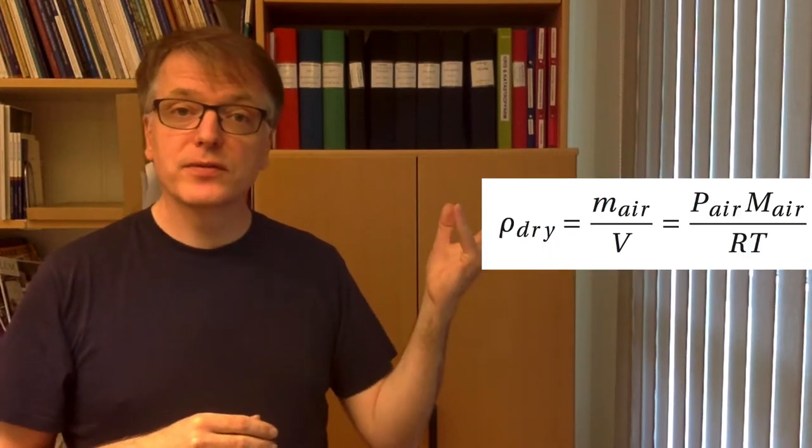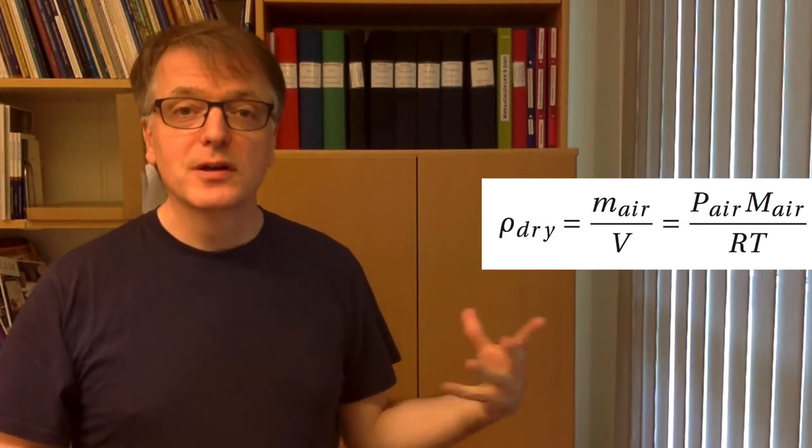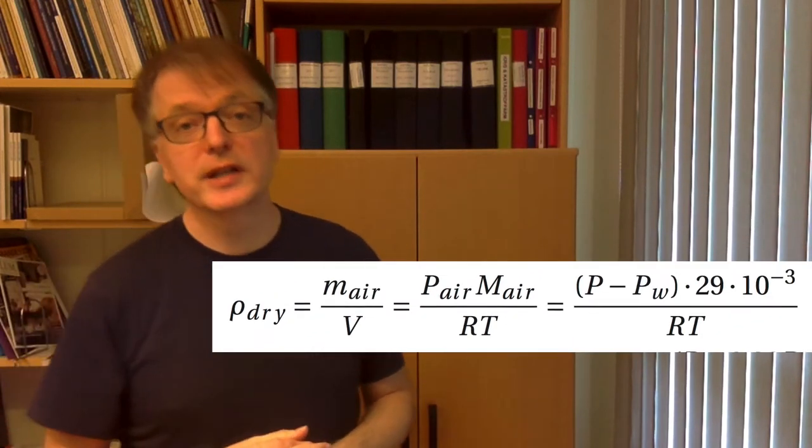The dry density takes the mass of air—so oxygen and nitrogen essentially—and divides that with the total volume. The total volume also contains some water vapor, so the equation looks like this: mass of air without any water divided with the total volume which also has water in it.